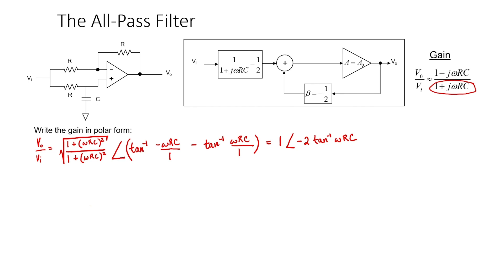In fact, the phase changes from 0 to 180 degrees in this particular filter, and right at the frequency omega equals 1 over RC, the phase shift is going to be negative 90 degrees.